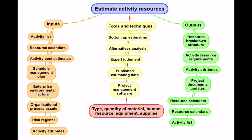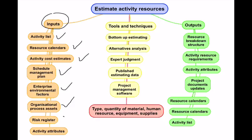Estimate Activity Resources is the next process under planning. On the input side we have the activity list, resource calendars, activity cost estimates, schedule management plan, enterprise environmental factors, organizational process assets, risk register, and activity attributes. Most of these things we have already discussed. The risk register is nothing but a list of probable risks, and it acts as an input for estimating the activity resources.